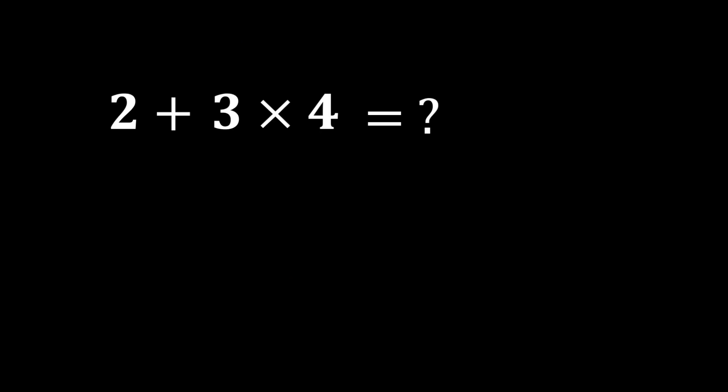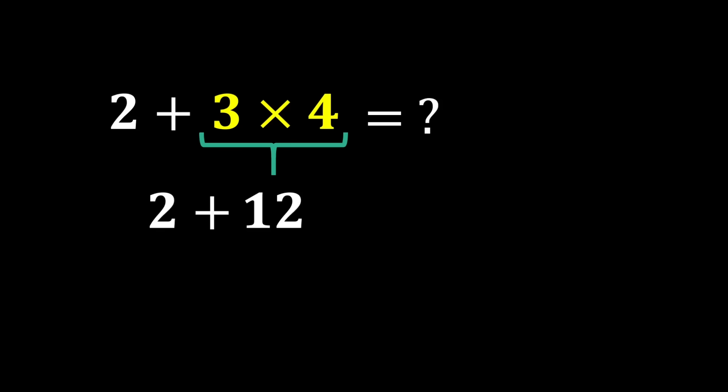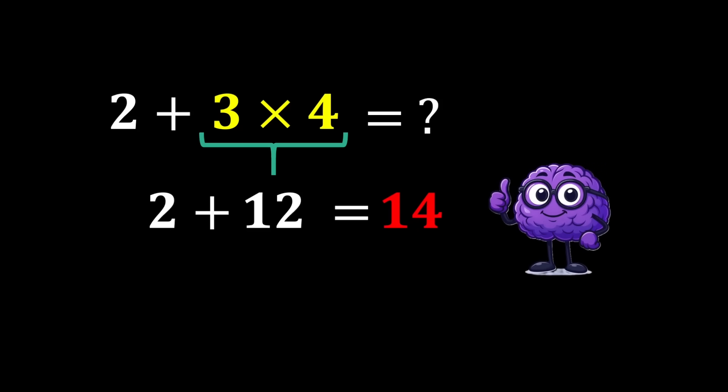Example: 2 plus 3 times 4. According to PEMDAS, multiplication has a higher priority than addition, so we do the multiplication first. 3 times 4 becomes 12. And in the end we calculate 2 plus 12, which becomes 14. So the correct answer is 14.